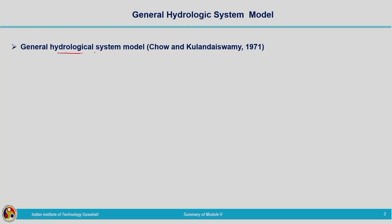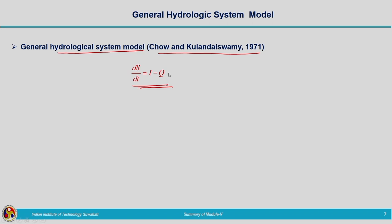After that we moved on to the general hydrologic system model proposed by Chau and Kulande Swamy. This model makes use of the continuity equation: dS/dt = I − Q, where dS/dt represents the time rate of change of storage, equal to inflow minus outflow. According to Chau and Kulande Swamy, the storage function S is considered as a function of inflow, outflow, and their derivatives.